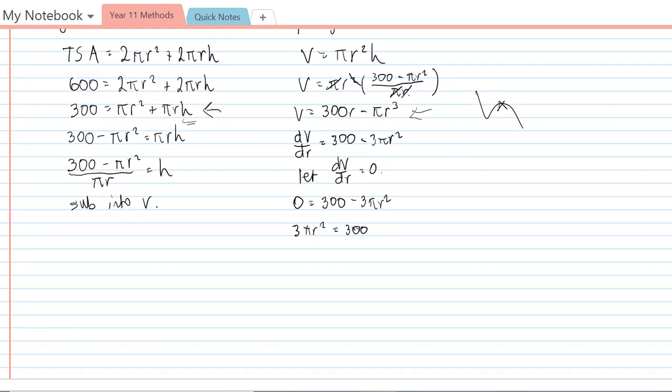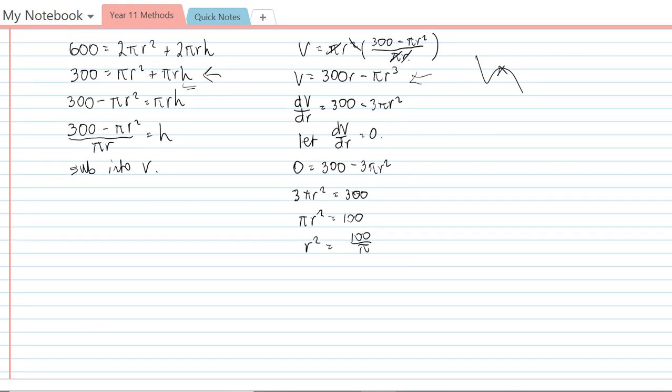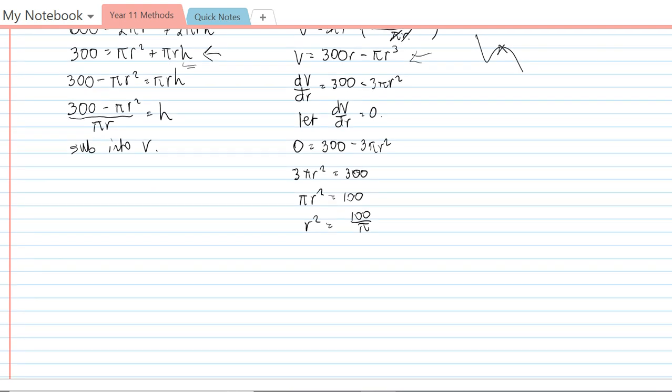I can divide by 3 on both sides. So πr² = 100. I can divide by π on both sides. So r² = 100/π. And then I need to take the square root. So r =